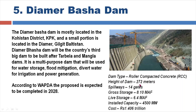Diamer Basha Dam is a roller-compacted concrete dam with a height of 272 meters. It has 14 gates, a storage capacity of 8.10 million acre feet, a live storage of 6.4 million acre feet, and an installed capacity of 4,500 megawatts.